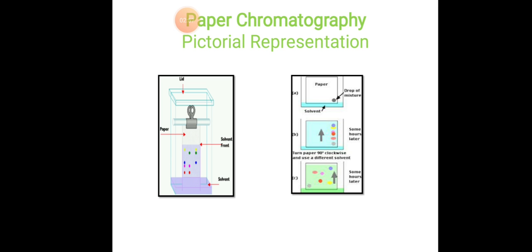Paper chromatography pictorial representation: If we see this is the vertical type. Here the paper is clamped into the holder and the bottom edge is dipped into the solvent where the different samples are moving. The highest movement is known as solvent front. It is closed with the help of a lid. After some hours, we have to turn the paper 90 degrees clockwise and use a different solvent. The mixture with same retention will get separated because of use of second solvent.